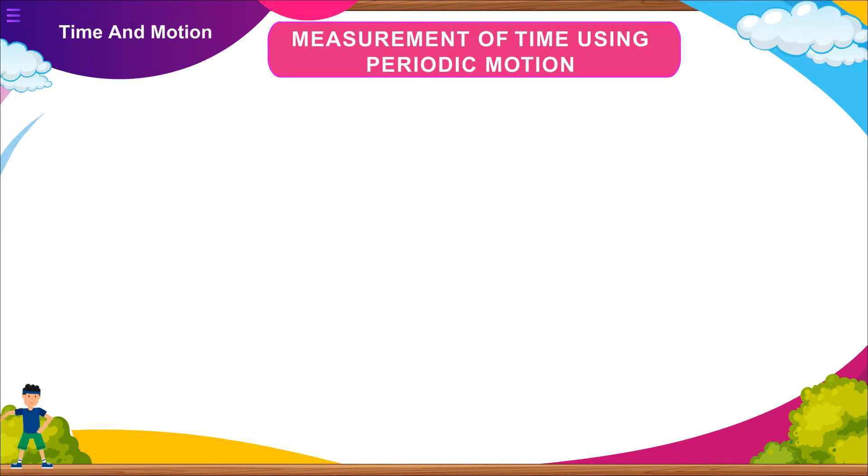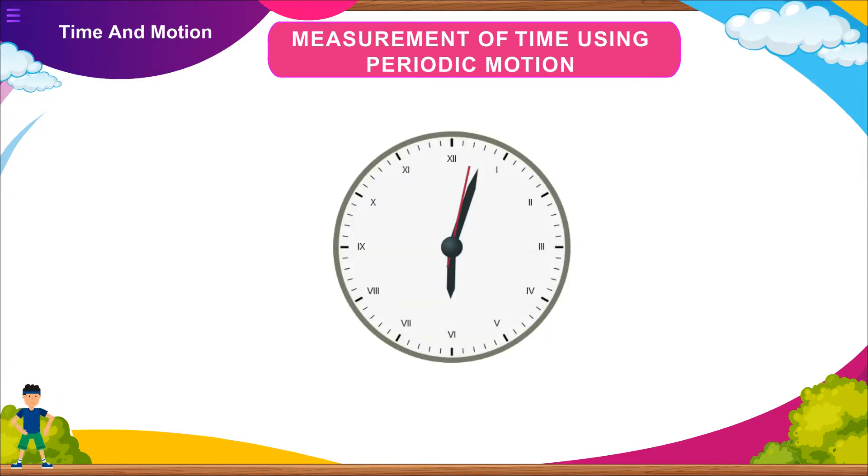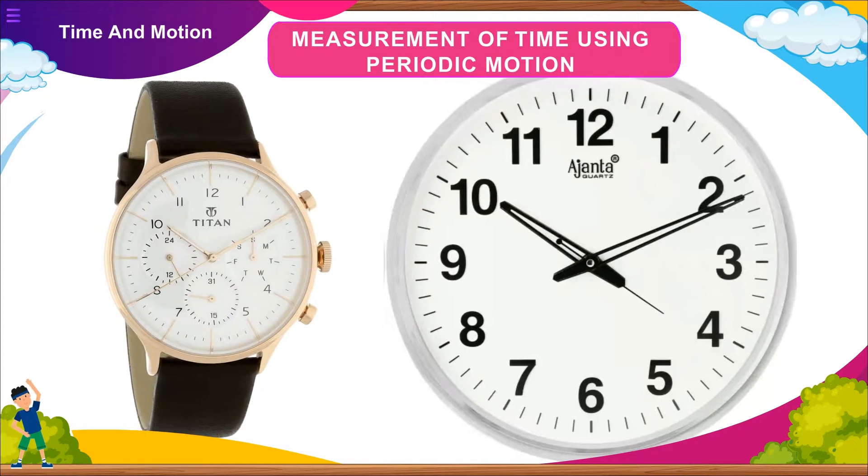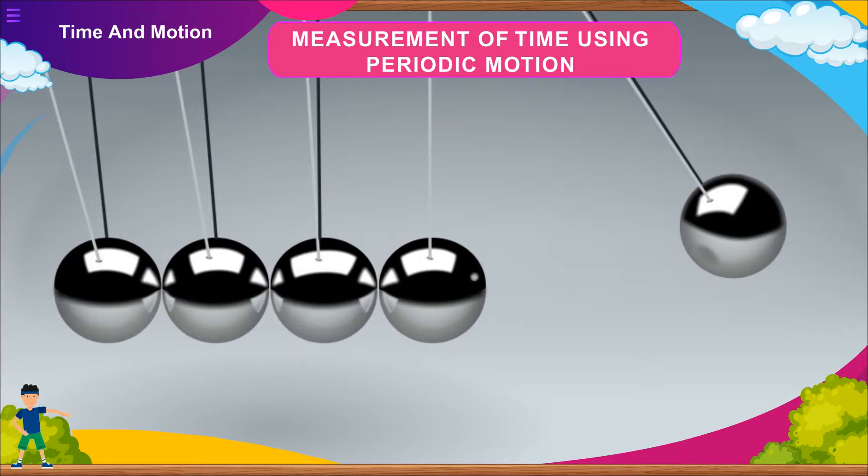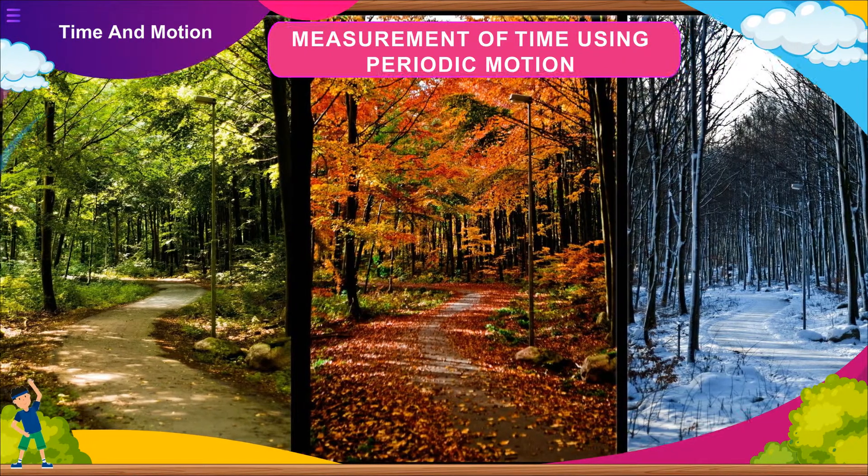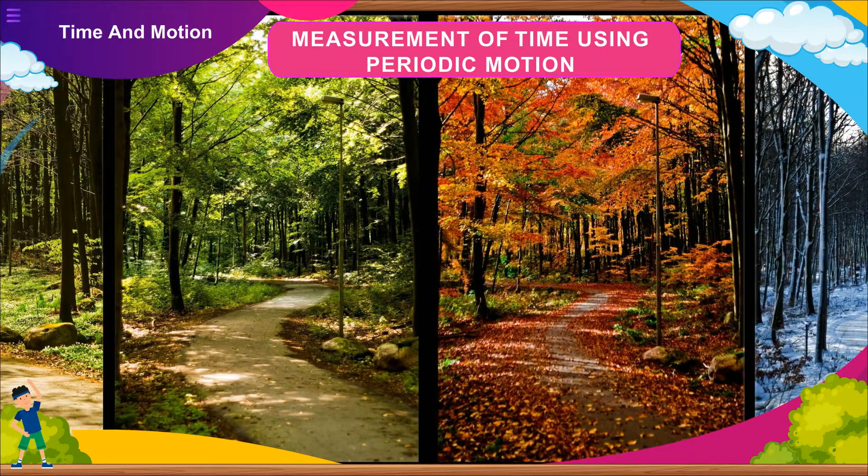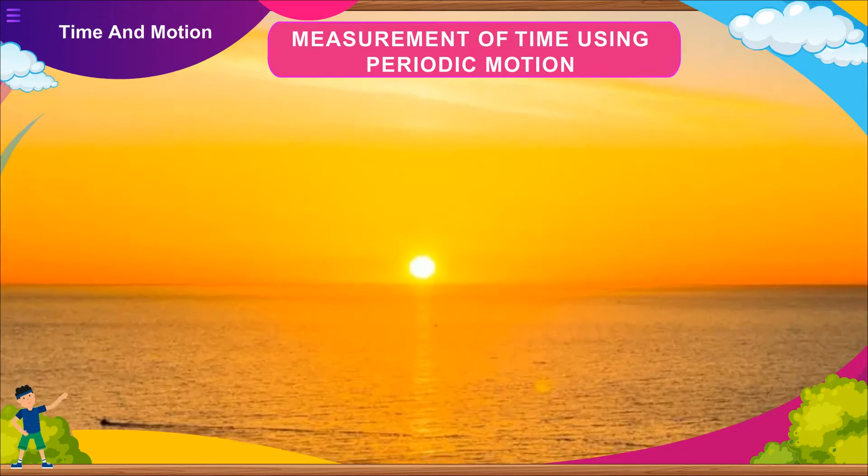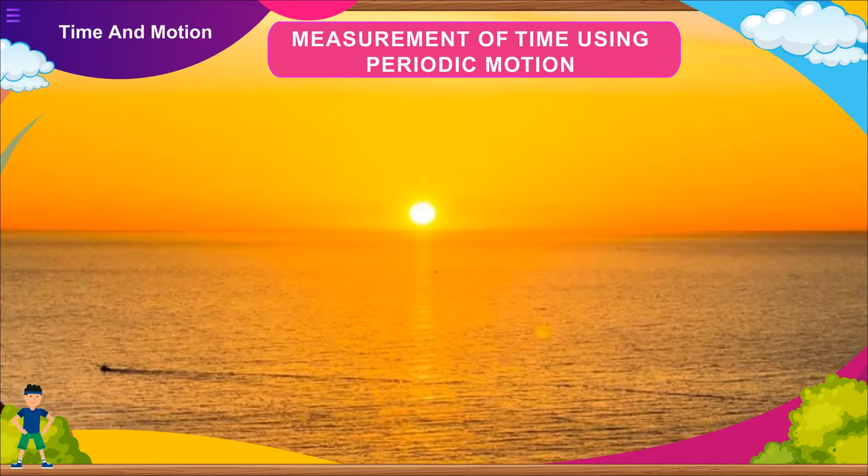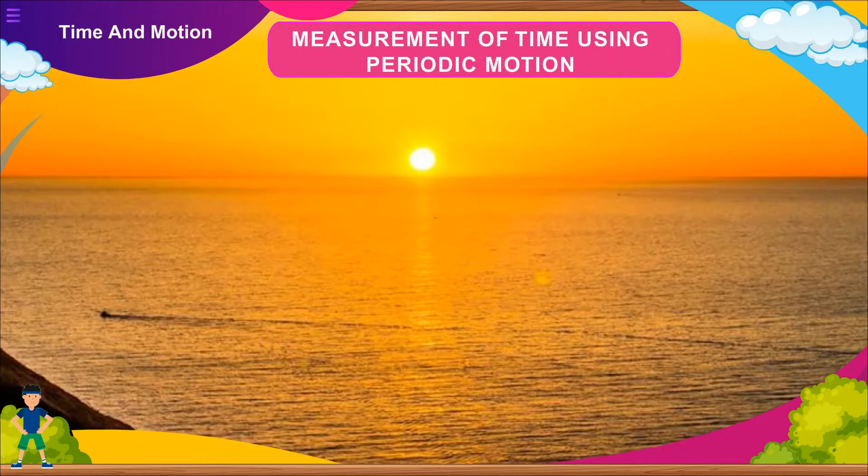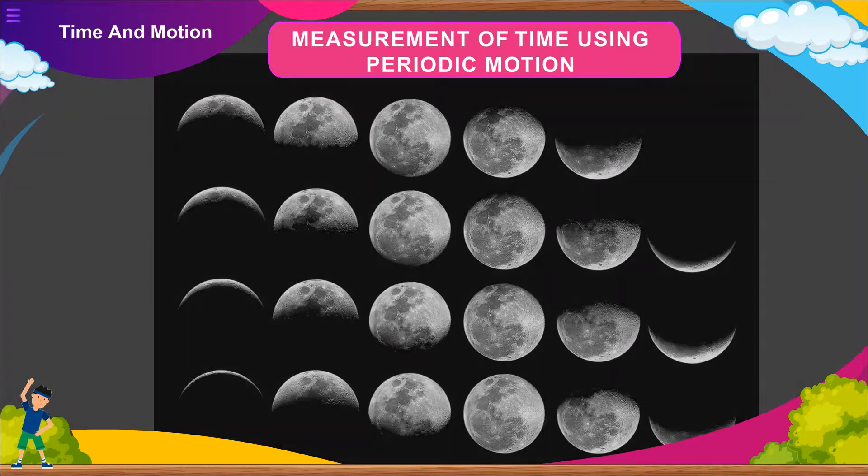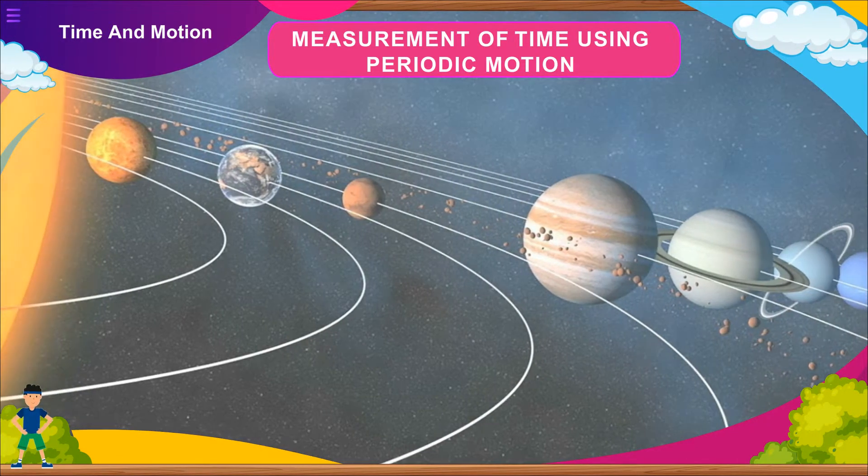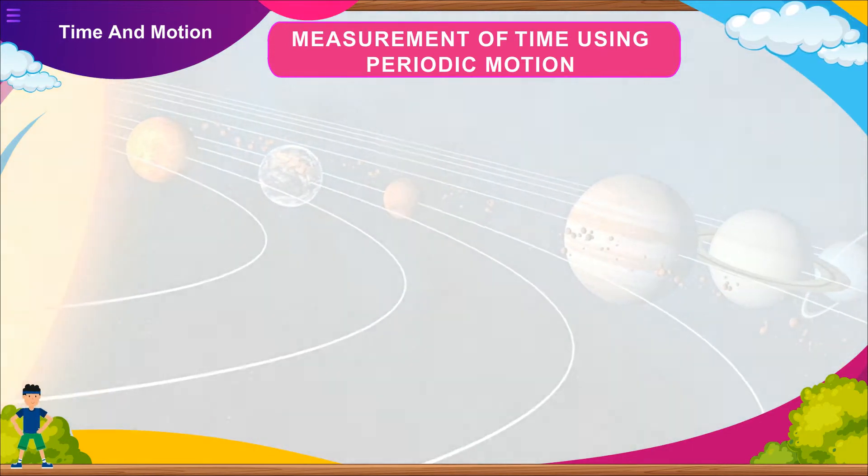Measurement of time using periodic motion: Motion that is repeated after a fixed interval of time is said to be periodic motion. Devices like watches and clocks are all based on periodic motion. One of the most well-known periodic motions is that of a simple pendulum. Our ancestors noticed that many events in nature repeat themselves after definite intervals of time. For example, they found that sun rises every day in the morning. The time between one sunrise and the next was called a day. Similarly, a month was measured from one new moon to the next. A year was fixed as the time taken by the earth to complete one revolution of the sun.